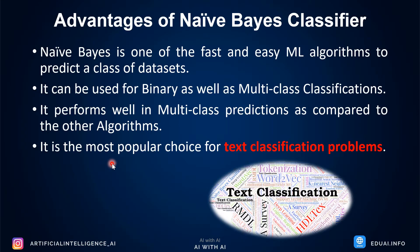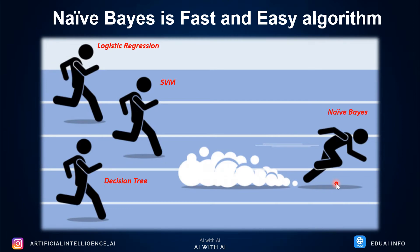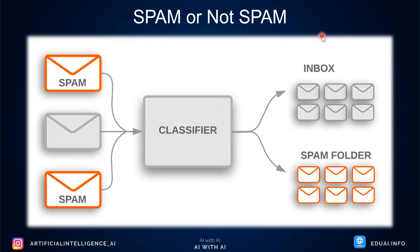The most popular use case of Naive Bayes is text classification. Naive Bayes can be preferred over other algorithms like logistic regression, SVM, and decision trees because it is fast and easy. It can be used in real-time applications — where you want predictions on live data immediately at runtime. The most popular application is text classification, such as classifying whether an email is spam or not spam.